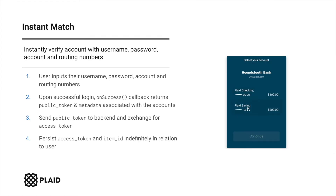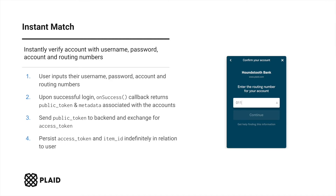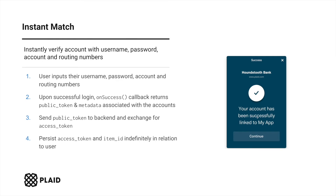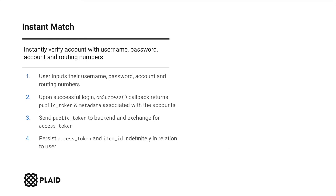You'll then send this public token to your backend, where you will exchange it for an access token via our token exchange endpoint. Then persist the returned access token and associative item ID indefinitely in relation to the user, as you'll need these when making API requests to Plaid's auth endpoint and receiving webhooks for item updates, respectively. For instant match, the access token is immediately ready to retrieve the user's auth data from their financial institution via our auth endpoint.